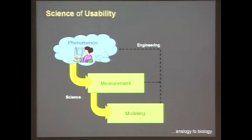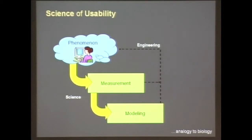The phenomenon we're examining is a user in front of a visualization — that's the natural phenomenon we're observing. What we want to do is measure things about that phenomenon and then model things so we can do better. The trick is coming up with ways to measure this phenomenon. As an analogy, biology research really took off when good measurement capabilities were created — things like gene arrays. When we got the ability to do lots of measuring, suddenly we could do a whole lot of biology. I think it's the same in usability.